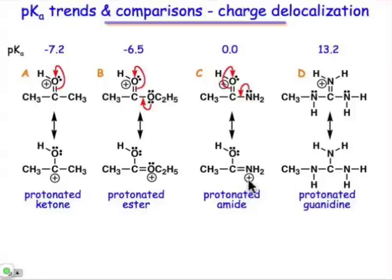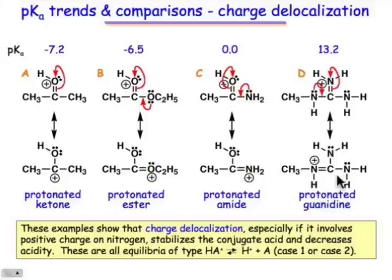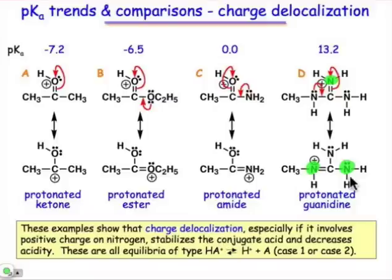The presence of that nitrogen atom makes the protonated amide more stable than the protonated ester. And in the case of the protonated guanidine — the guanidinium cation — we have the ability to spread that positive charge not just over two atoms, but you'll see that you could draw a resonance structure that puts the positive charge on a third atom as well. The ability to spread charge over three nitrogen atoms makes the protonated form of guanidine a very stable cation.